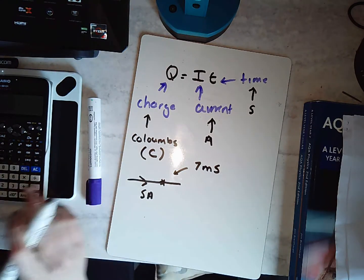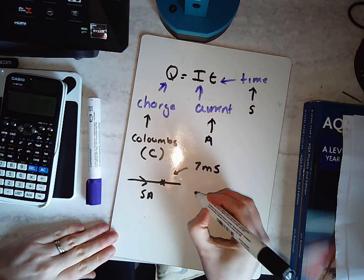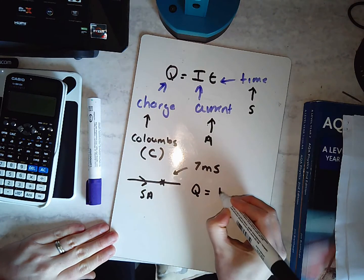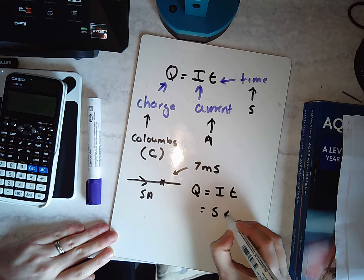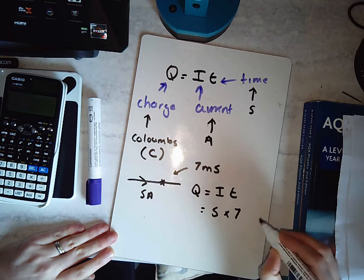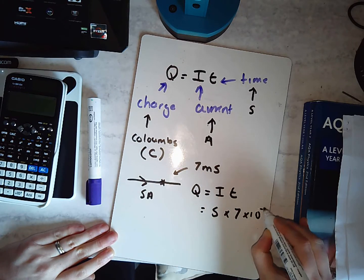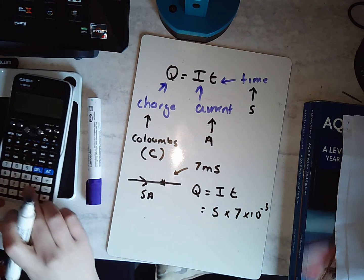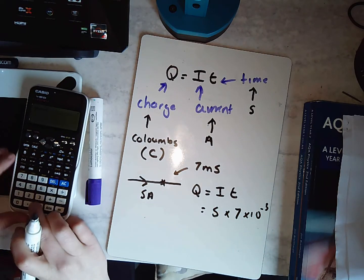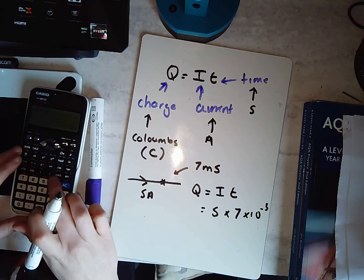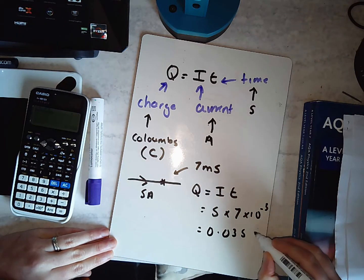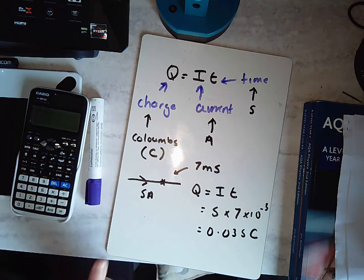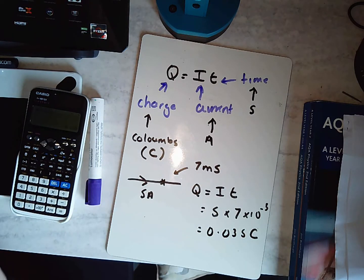So we've got Q equals I times T. So I've got I, five, times seven, and it's milli, so it's going to be times ten to the minus three. So five times seven times ten to the minus three. I know passing this point is 0.035 coulombs of charge passes that point in seven milliseconds.